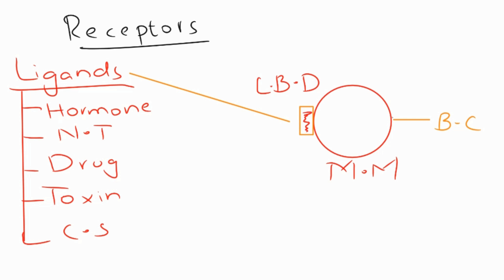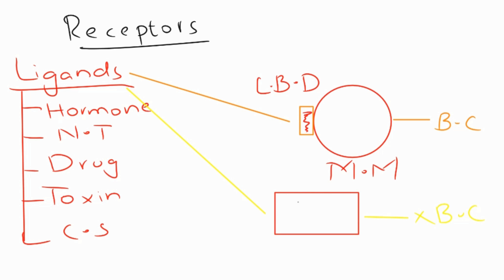Consider another protein — a plasma protein. Ligands will also act on this protein, but they cannot show any biochemical change. So although the ligands are acting on this plasma protein, they fail to show any biochemical change, and therefore it is not considered a receptor. The specialty of receptors is that different ligands act on them and in response to this binding, receptors produce a biochemical change.